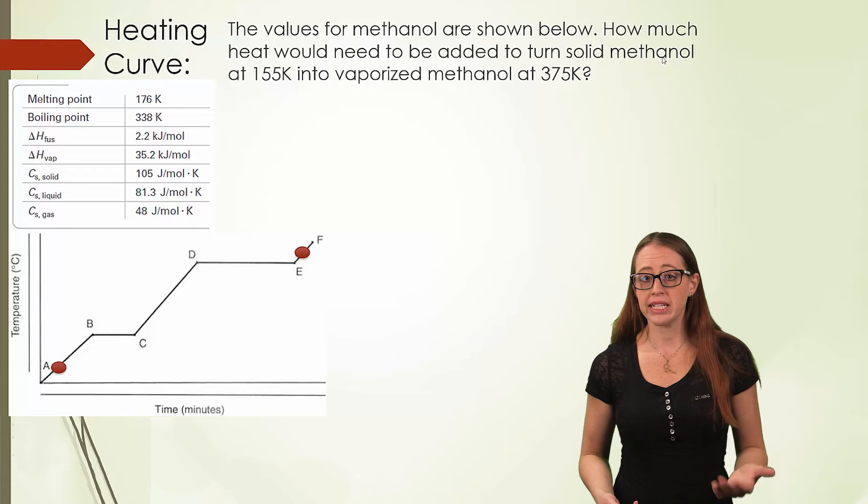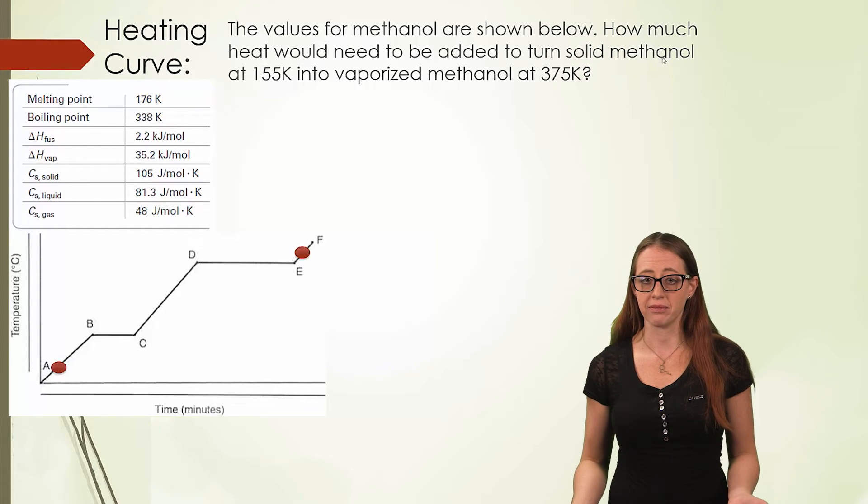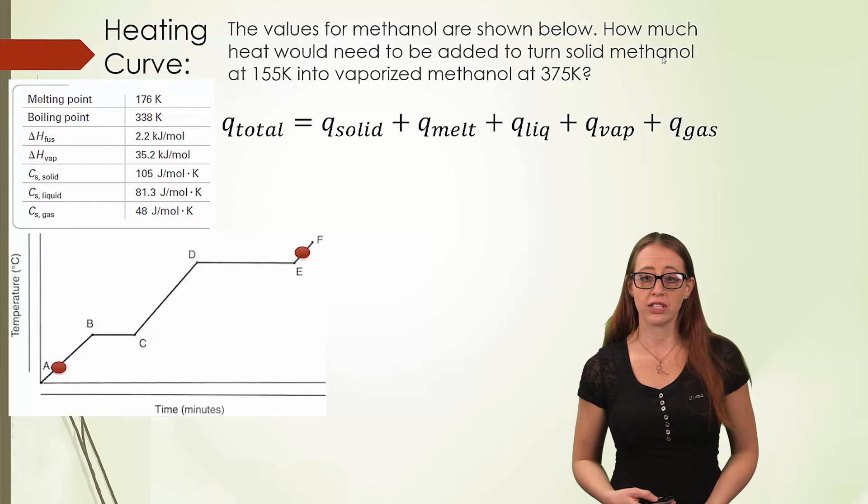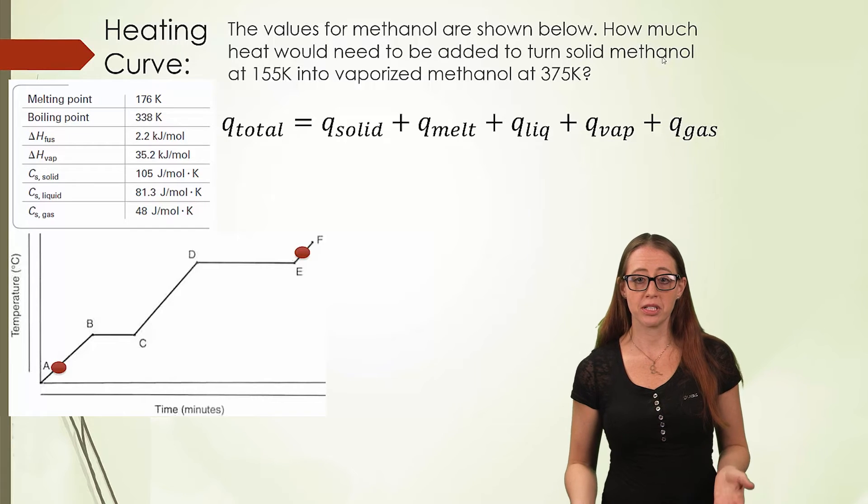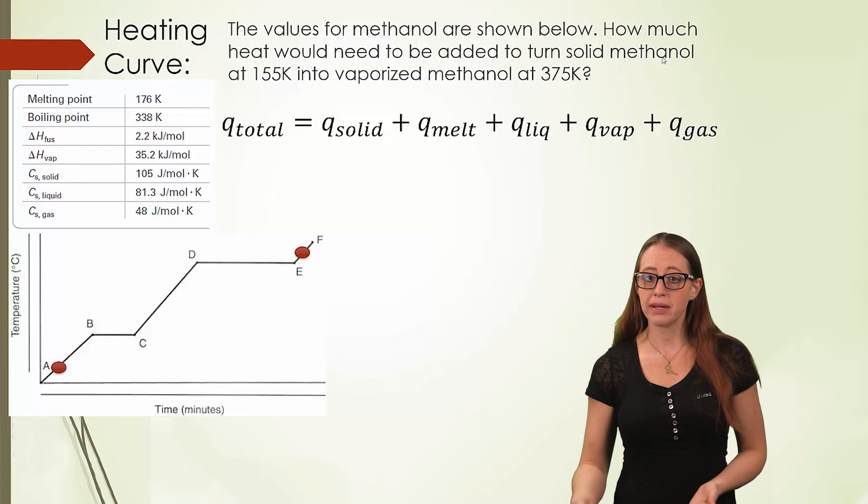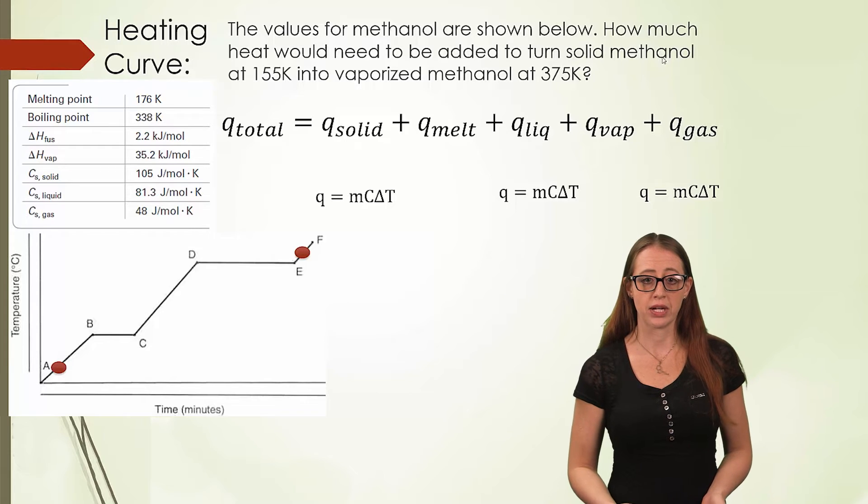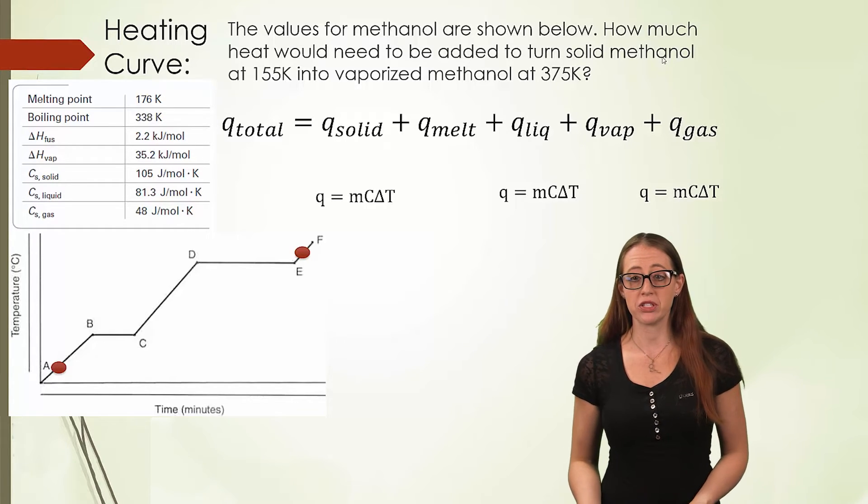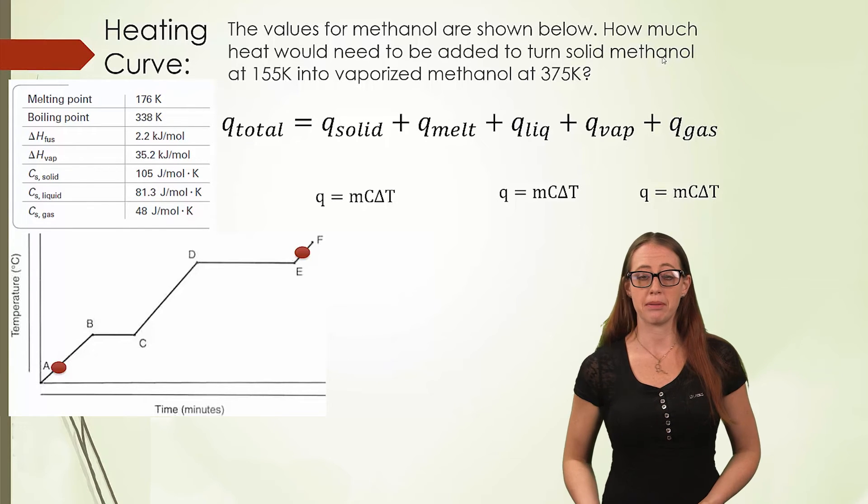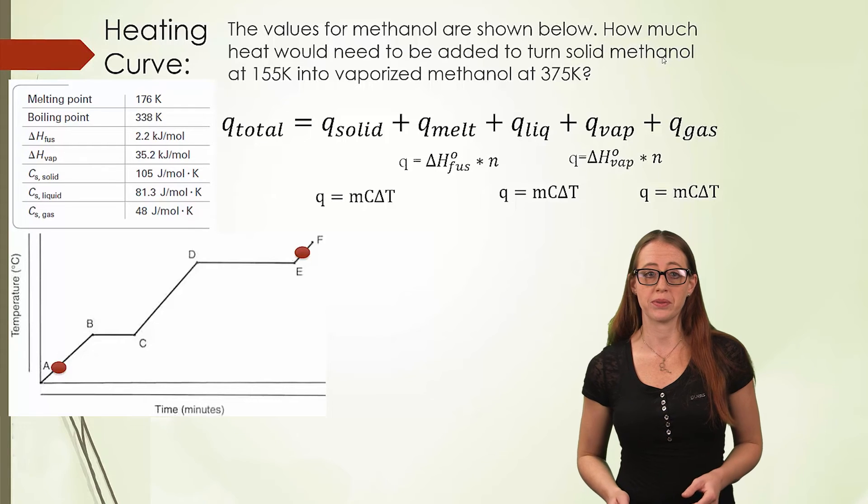We know that when heating within a phase, we need to use Q is equal to MC delta T, being careful to grab the appropriate heats. For the phase changes, we are going to multiply the appropriate constant by the number of moles. Here, I give you the heats of fusion and vaporization in moles, and so we will need to multiply by moles. If I had given it to you by the gram, then you would multiply by the mass. Let's work through this now.